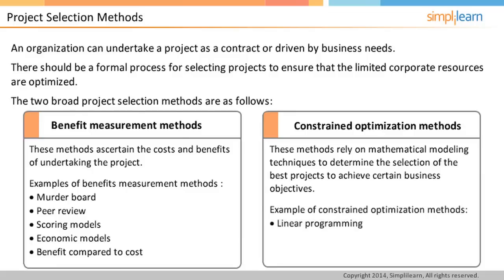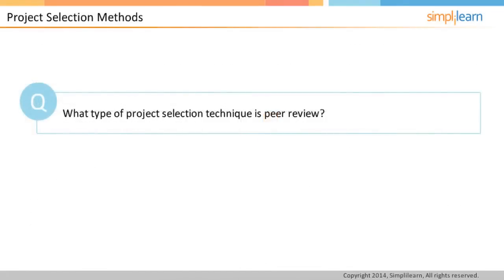In reality, you might not have seen these methods followed in project selection. Often, personal relationship with the sponsor may be more important than anything else. This is quite normal and any organization worldwide works this way. However, as a certified project manager, it is important for you to be familiar with more scientific methods of project selection. A typical question on the PMP exam could be: what type of project selection technique is peer review? And the right answer is benefit measurement method.